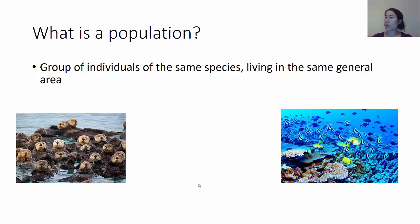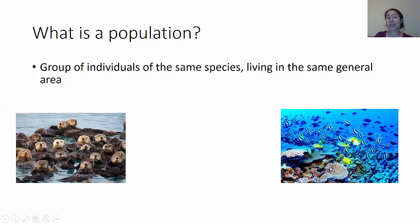I've got two pictures here. Which one of them fits the definition of a population? I've got a group of otters living in the ocean and a bunch of different types of fish and coral living together at a coral reef. If you guessed the otters, you are correct. The otters are defined as a population because they're one single species, one type of animal or plant living together in an area.